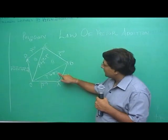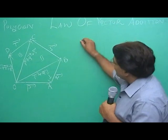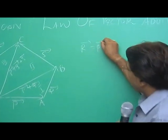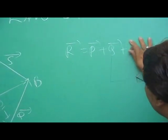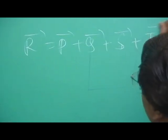We have used triangle law three times and we get vector r equal to vector p plus vector q plus vector s plus vector t.